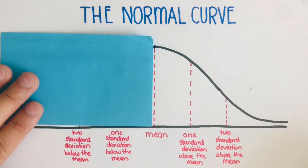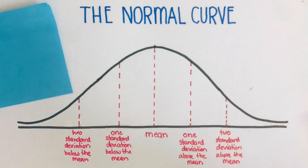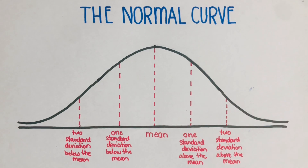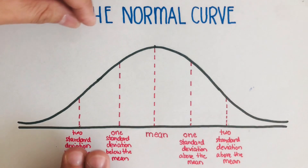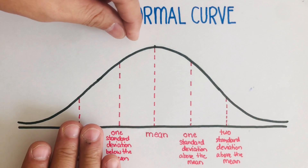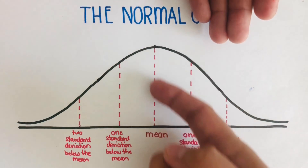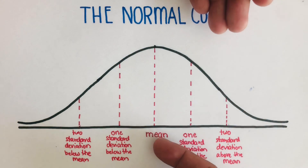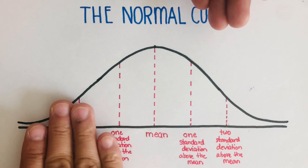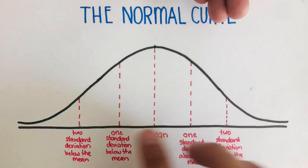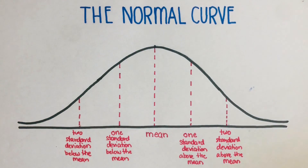Notice that the left and right sides are symmetric to each other. Symmetric means if I fold this curve through the mean as the axis of symmetry, these sides are going to be on top of each other — so we call these two sides symmetric to each other.